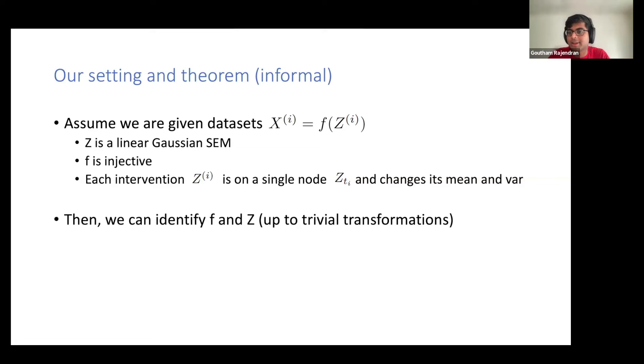Under these assumptions, we show that we can learn this nonlinear map F and also the causal graph structure, and the latent variables up to some trivial transformations like rotation and similarity transformation, which cannot be avoided. That's the summary of this work. Any questions so far?